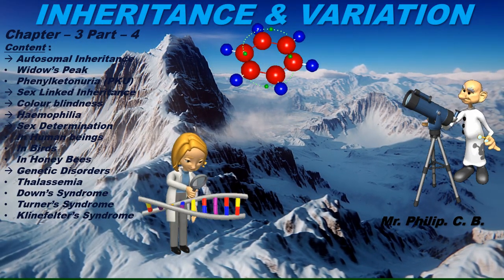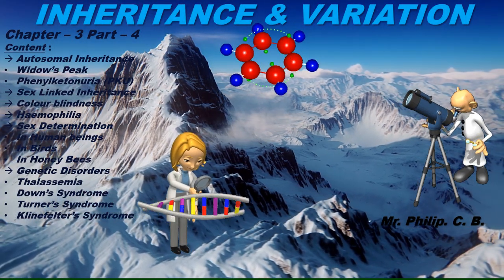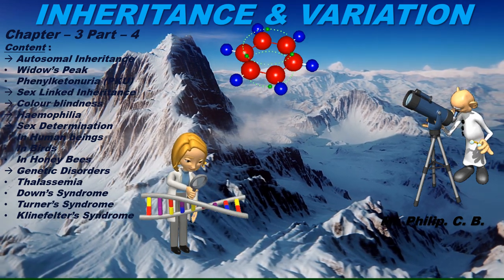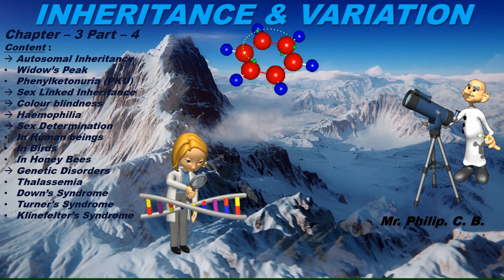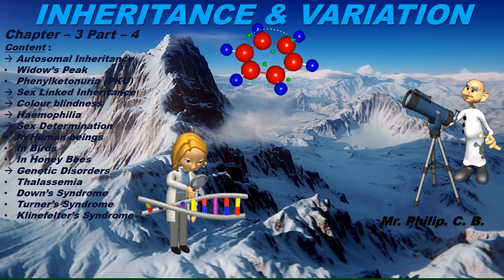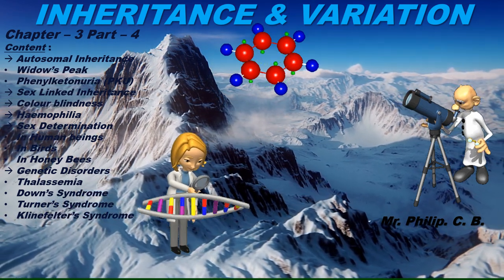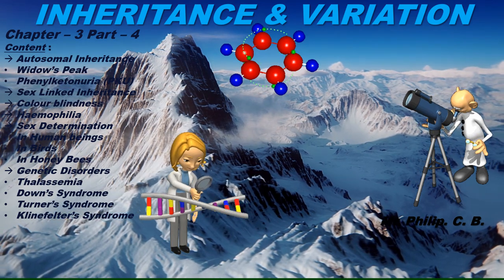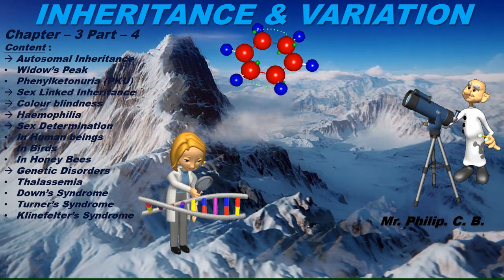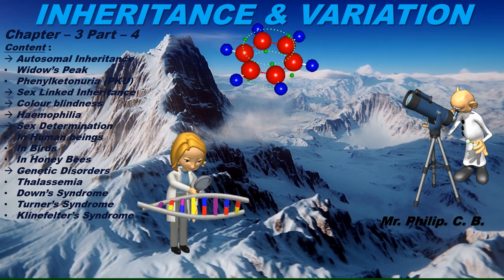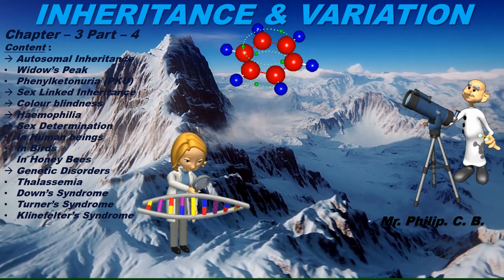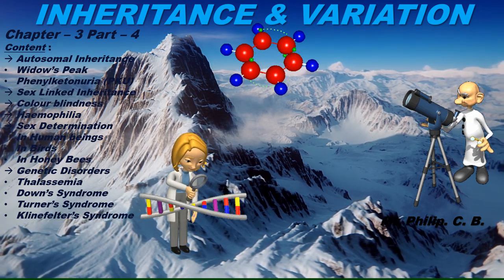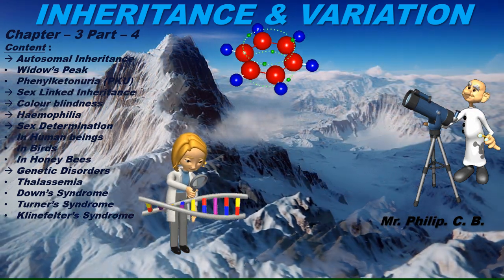Hello students. Today we are going to learn the fourth part of the chapter on inheritance and variation. In this part we will learn autosomal inheritance including widow's peak and phenylketonuria, then sex-linked inheritance covering color blindness and hemophilia, sex determination in human beings, in birds and in honeybees, and also genetic disorders: thalassemia, Down syndrome, and Turner syndrome.